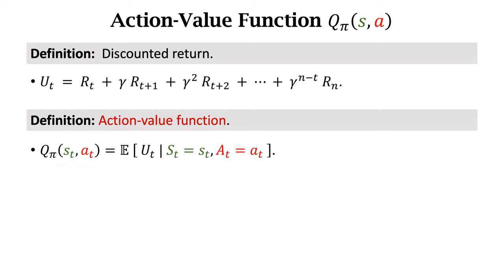q_π depends on the current state st and action at. This is because we regard st and at as observed values. They are not eliminated by the expectation. q_π tells that given the current state st, how good it is to take action at.